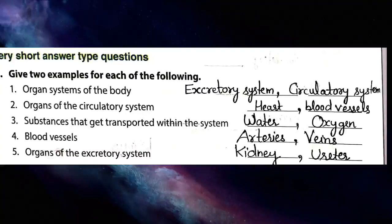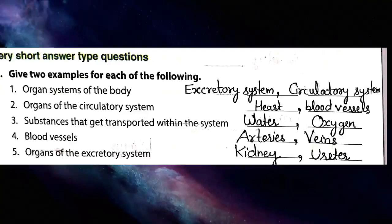Organs of the circulatory system: heart (H-E-A-R-T) and blood vessels (B-L-O-O-D V-E-S-S-E-L-S). Substances transported within the body through blood: water (W-A-T-E-R), oxygen (O-X-Y-G-E-N), and nutrients (N-U-T-R-I-E-N-T-S).